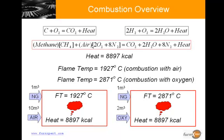However, they absorb heat and reduce the flame temperature. During perfect combustion if methane is burnt with oxygen it produces a flame temperature of 2,871 degrees. Using air with methane produces flame temperature of about 1,927 degrees centigrade. The picture below gives an overview of combustion of natural gas with both air as well as with oxygen.